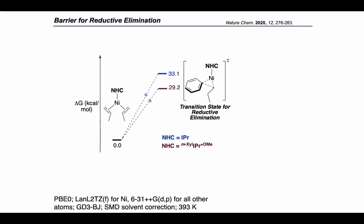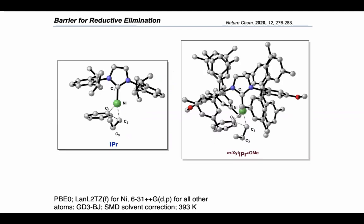To address this, we again turned to DFT computations and modeled the barrier for the rate-limiting reductive elimination transition state with both the small NHC IPR, shown in blue, and the large NHC meta-xylyl-IPR*-methoxy, shown in red. Consistent with our experimental results, we found about a 4 kcal/mol difference in the barriers for reductive elimination. We thought that maybe this difference comes from a steric difference in the transition state. Classically, with phosphine-ligated palladium complexes, you might imagine a more sterically hindered ligand would push the two substituents undergoing reductive elimination closer together and drop that barrier. However, when we look at the geometry of the transition states for both NHC ligands, the bond lengths and angles around the aryl–nickel–alkyl core are almost identical, and this is not a traditional steric effect on reductive elimination.